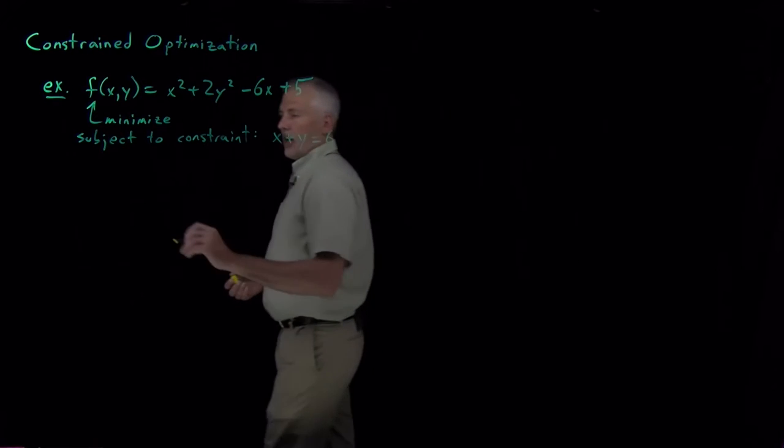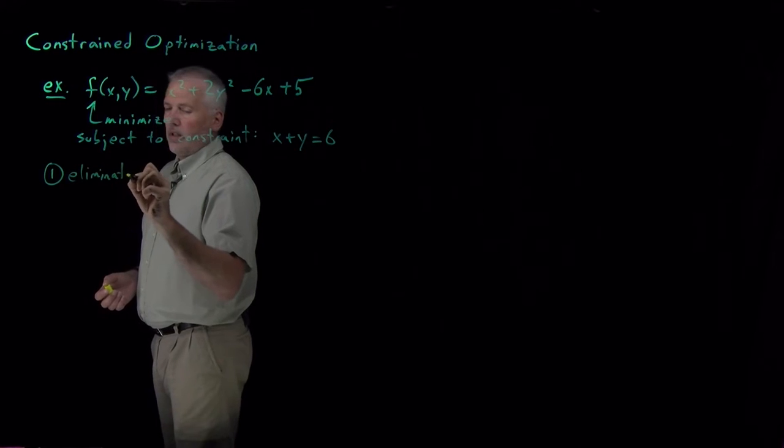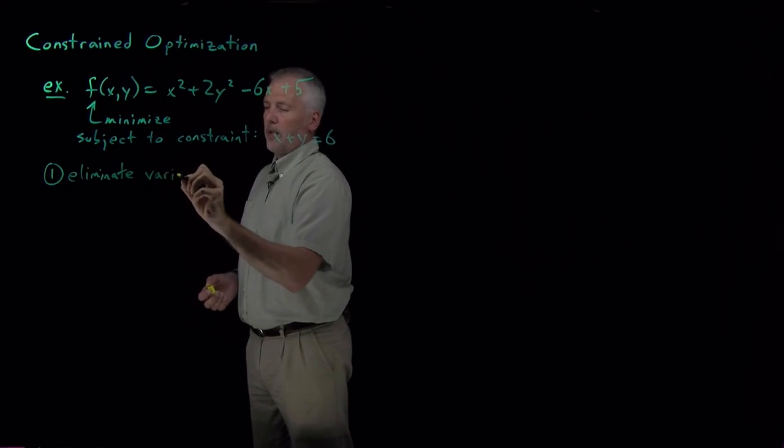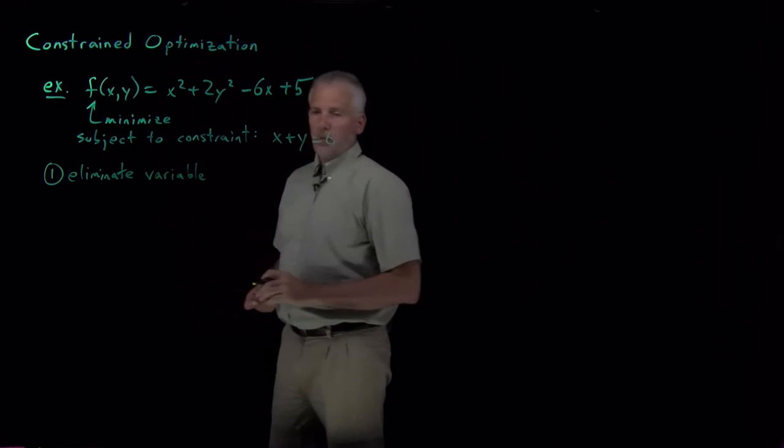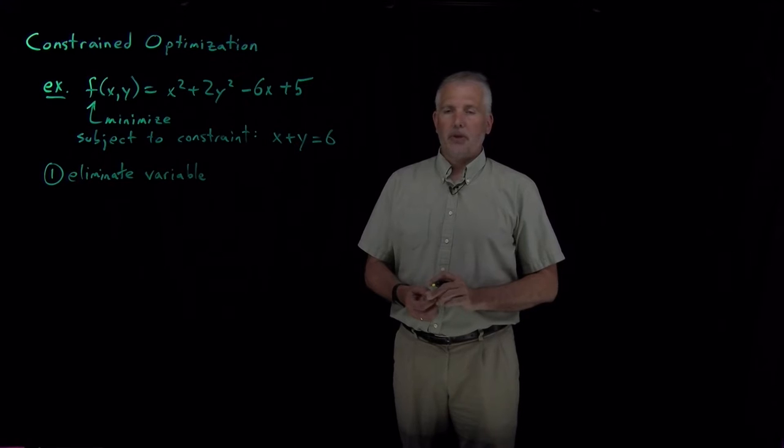So our approach number one is let's consider using that constraint to eliminate a variable. If we have more than one constraint, we can use the multiple constraints to eliminate multiple variables.